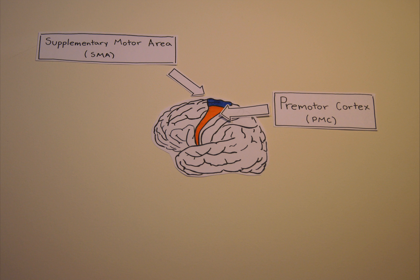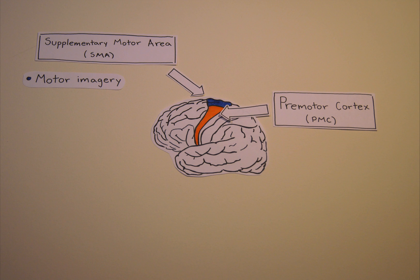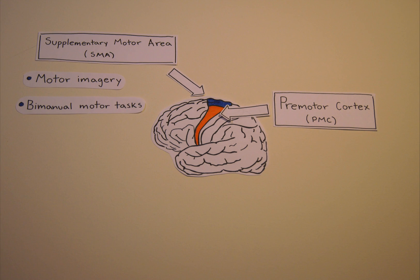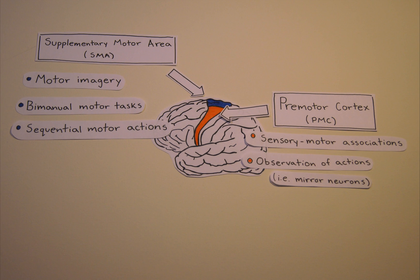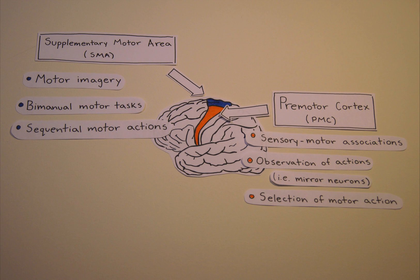For example, the SMA is associated with the processing of motor imagery and is active during both bimanual motor tests as well as sequential motor actions. The PMC is involved in sensory-to-motor associations, the observation of action which is facilitated by mirror neurons, and the selection of motor action.